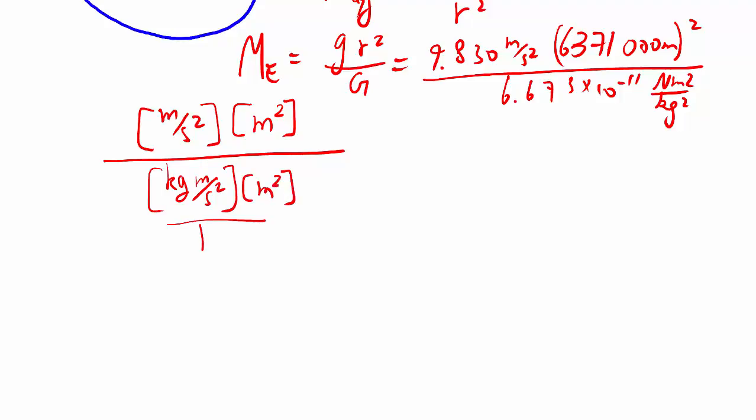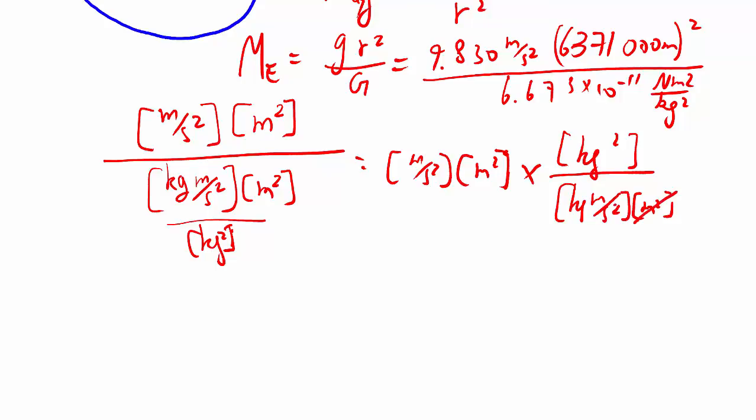times a meter squared, all divided by kilogram squared. When you divide and divide like that, you're doing a division, so that's like multiplying by the reciprocal. That's why kilogram squared ends up on top. That cancels out, that cancels out, that cancels out, and you get kilograms in the end,